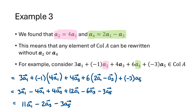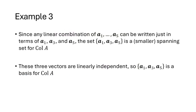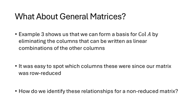Any linear combination of the five columns of A can be rewritten just in terms of A1, A3, and A5. Since those three vectors are linearly independent, the set {A1, A3, A5} is a linearly independent spanning set for col(A) — that is, a basis. So we form a basis for col(A) by eliminating any columns that can be written as linear combinations of other columns, and it was easy to spot those columns because A was in reduced echelon form.